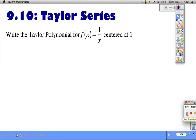This section we're going to go back to Taylor series and combine it with the idea of intervals of convergence. We're going to start with writing a Taylor polynomial for f of x equals 1 over x, centered at 1.